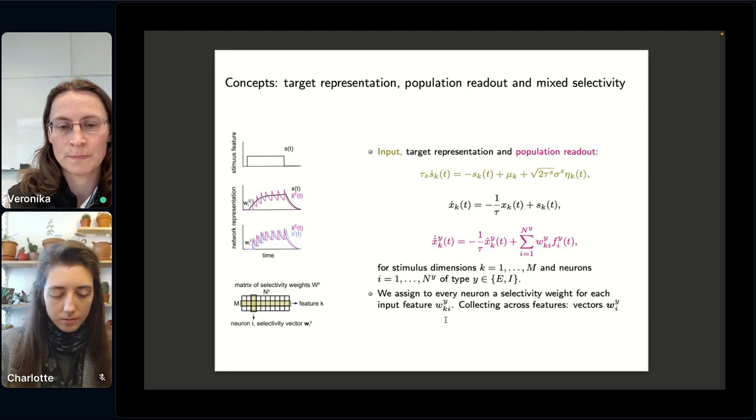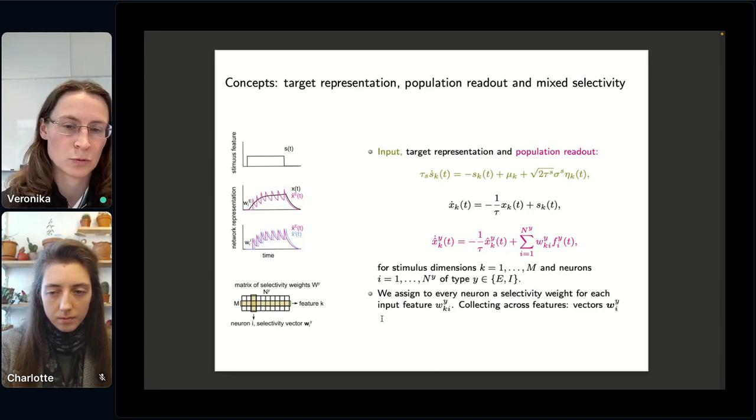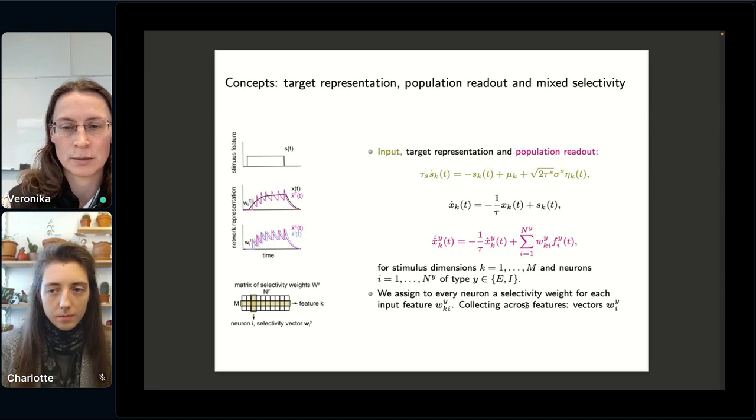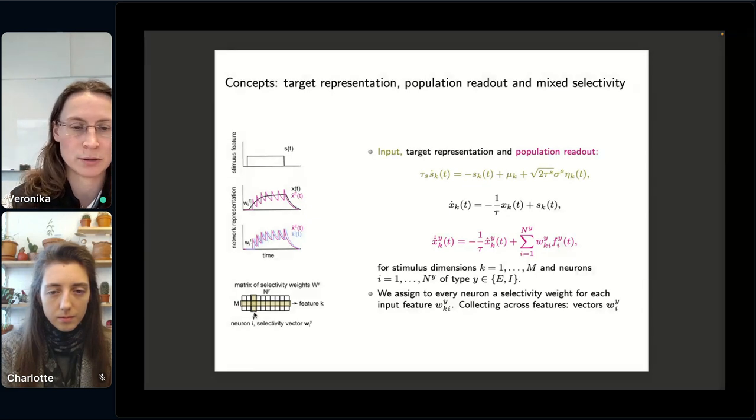So we assume there can be several signals that can be encoded by this network. That's why we have several dimensions of the stimulus coming from these several features of the stimulus. And in order to be able to encode this multitude of signals efficiently, we assign to every neuron a selectivity vector. And so we can represent this here with this matrix of selectivity weights, where each neuron has a vector which describes the selectivity of this particular neuron for each one of the features that we want to encode.